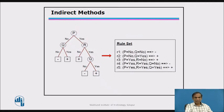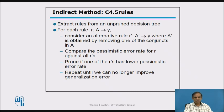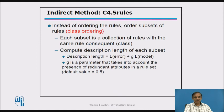Indirect methods involve going from a decision tree to a rule set. These are used in C4.5 rules: extract the rules, compare them, prune them, and repeat until the best rules are obtained by calculating the generalization error. Instead of ordering individual rules, order subsets of rules — also termed class ordering.